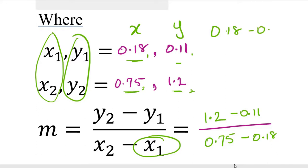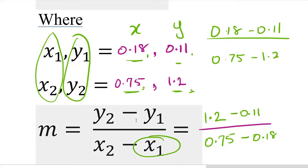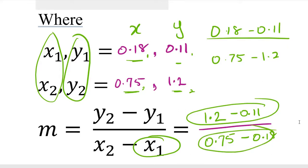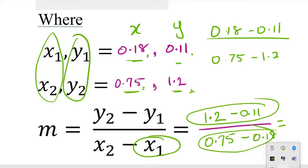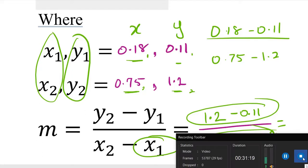Students often mix up which value goes where. You can write x1, y1 as the first coordinate pair and x2, y2 as the second. So the formula is: M = (y2 minus y1) over (x2 minus x1) = (1.2 minus 0.11) over (0.75 minus 0.18). Work out your numerator first, then your denominator. Hopefully that's going to help with the graphs — good luck with your assignment.